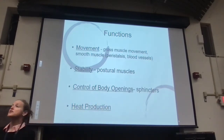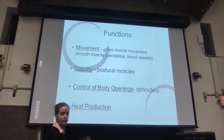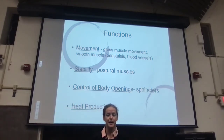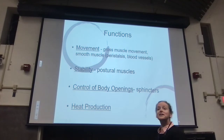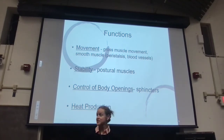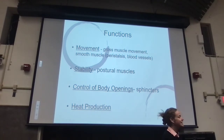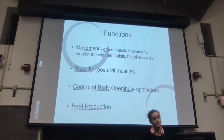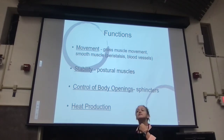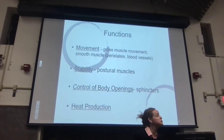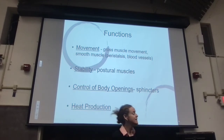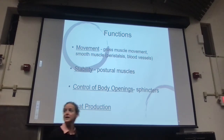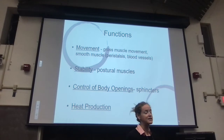The major function of muscles is movement. But there are other functions muscles provide. It's not just movement of our overall body — we also rely on muscles for movement of food through the GI tract. We rely on smooth muscle to help push blood through the arteries. So it's not just moving our limbs; it's also movement within our body, particularly smooth muscle.